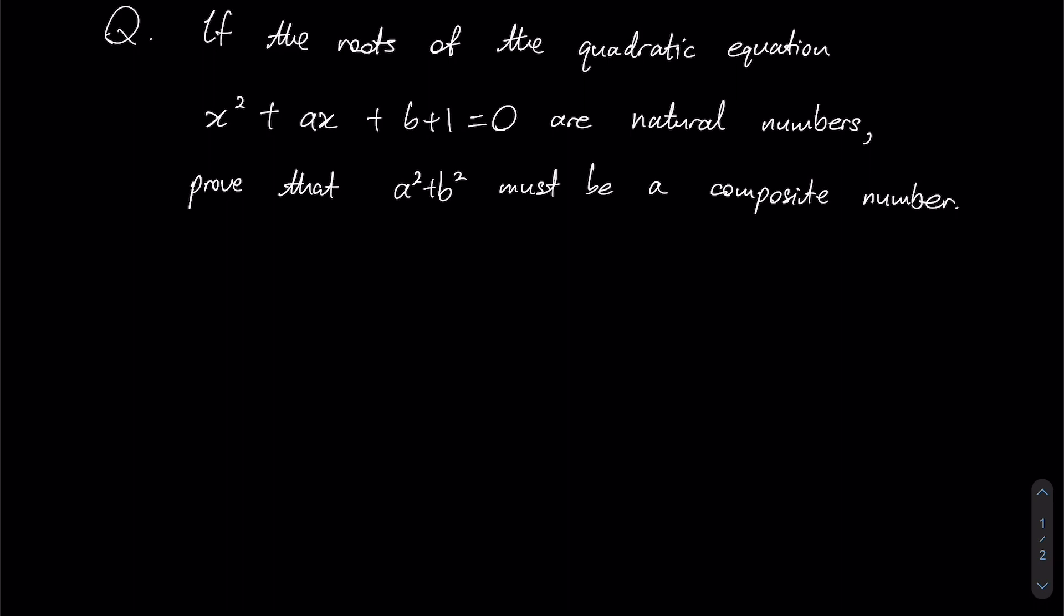First let us look at certain terms in the question that deserve attention. Natural numbers we can easily see as simply positive integers, so numbers going from 1, 2, 3, 4, and so on. Whereas composite numbers are basically numbers that are not prime, essentially numbers that can be expressed as a product of two or more positive integers, or you could simply see as non-prime.